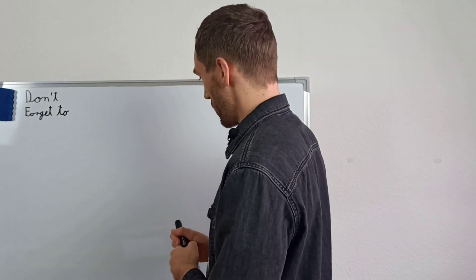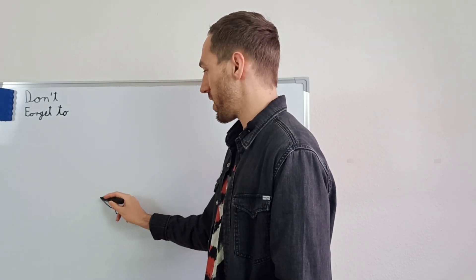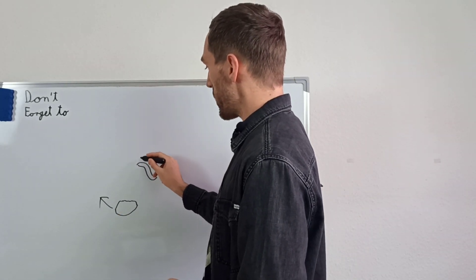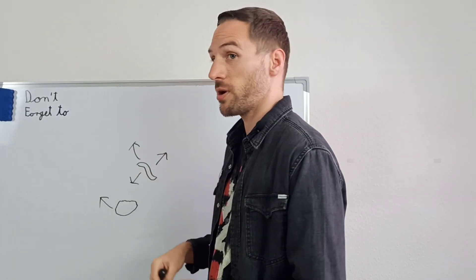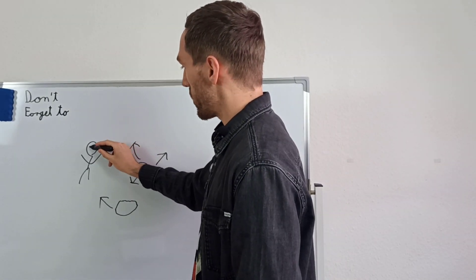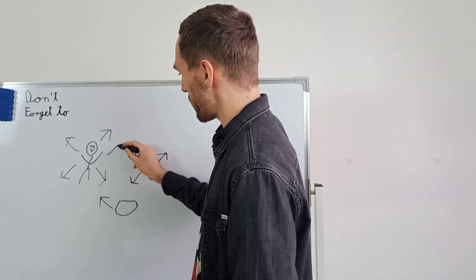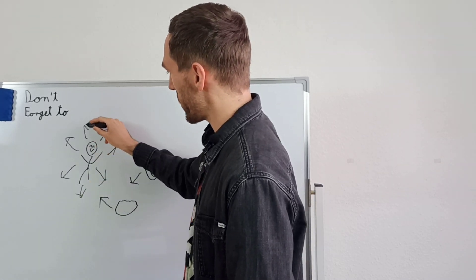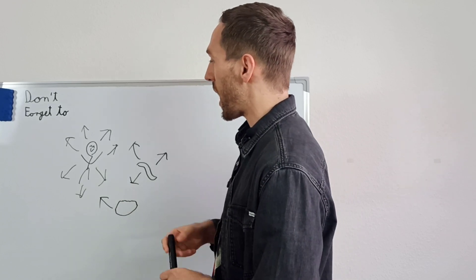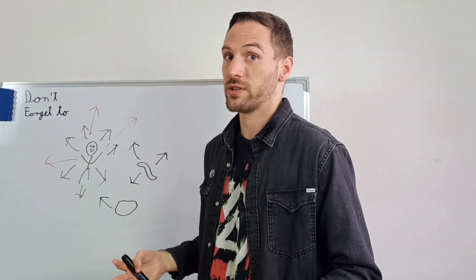Let's consider a rock. A rock cannot achieve a lot of things in its environment — it can achieve laying there and being there. Now consider a worm: it can achieve a few more things than a rock, so it is a more intelligent system. Now consider a human in the same environment: a human can achieve many more things than a rock or a worm. Yet a human is still far from being able to achieve all the things that could be achieved in that environment, so much more intelligent systems are still thinkable than humans.